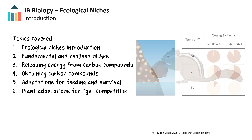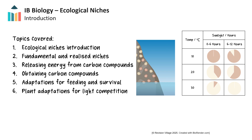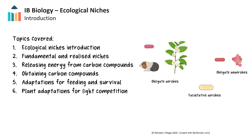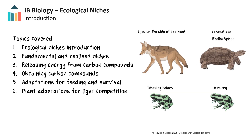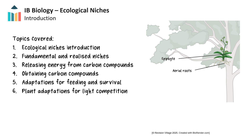We'll also explore the differences between fundamental and realized niches and how competition affects the niches of populations. We'll look at how organisms break down carbon compounds for energy and how they can be classified by their use or avoidance of oxygen. We'll also see that organisms can be classified by how they obtain carbon compounds from processes like chemosynthesis or photosynthesis, and how organisms have different adaptations for survival to both aid and avoid predation and herbivory. Finally, we'll explore some of the adaptations plants have to compete with other plants for access to sunlight.